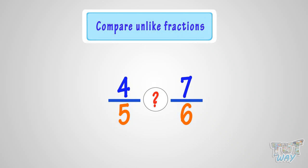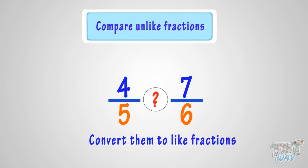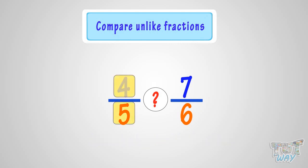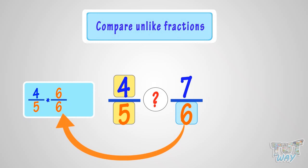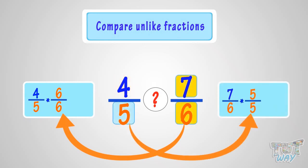For example, comparing 4 by 5 and 7 by 6. First, we need to convert them to like fractions, and then only we can compare them. For that, multiply both the numerator and denominator of each fraction with the denominator of the other fraction. That is, multiply 4 by 5 with 6 by 6, and 7 by 6 with 5 by 5.